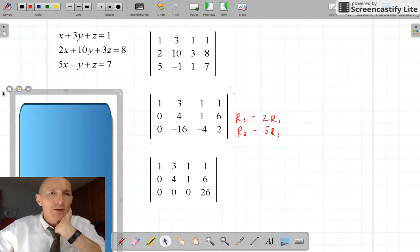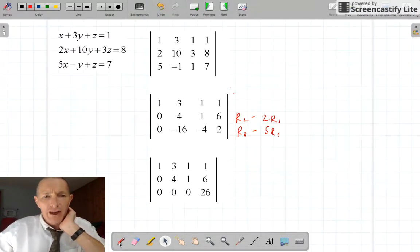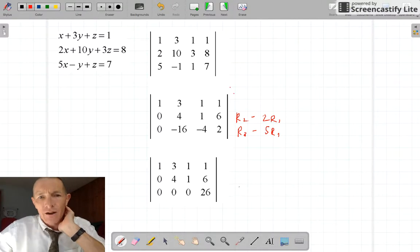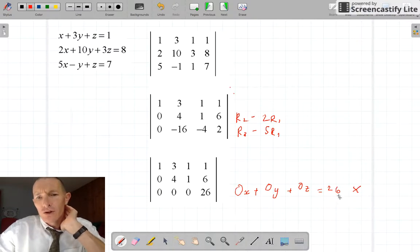So this is a problem, because what I'm effectively saying is that no x's plus no y's plus no z's are 26. Let's just write that out. That doesn't make any sense whatsoever. It doesn't matter what the value of x is, it doesn't matter what the value of y is, and it doesn't matter what the value of z is, I'm multiplying them all by 0, and I end up with 26. That statement is wrong. Now, I haven't done any bad maths in this. What it actually tells me is that there are no solutions.